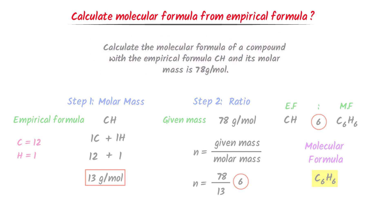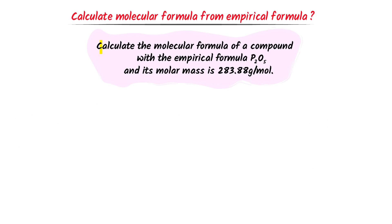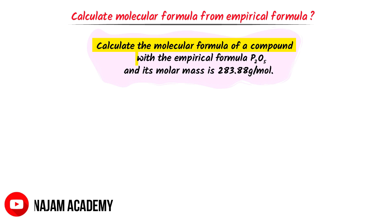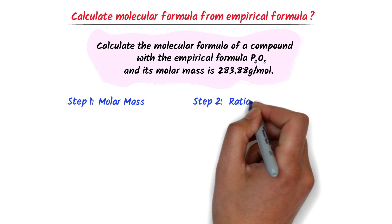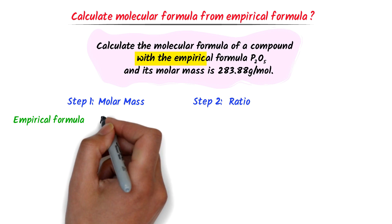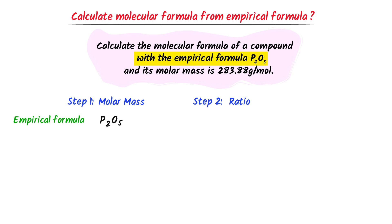Now let me teach you one more difficult numerical. Calculate the molecular formula of a compound with the empirical formula P2O5 and its molar mass is 283.88 gram per mole. I follow the two steps: first I find the molar mass of the empirical formula, and second I find the ratio. The given empirical formula is P2O5.